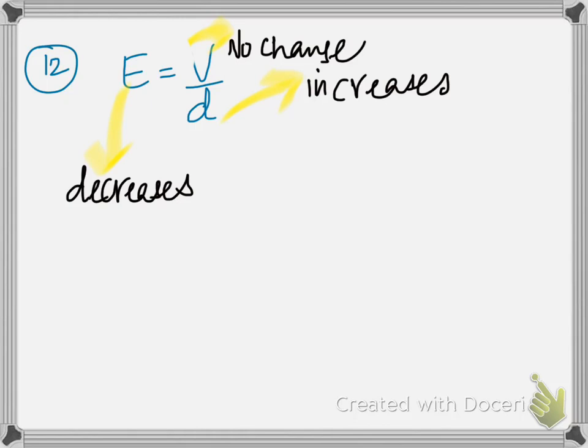Number 12. It says that a battery charges a paddle plate capacitor fully, and is then removed. The plates are immediately pulled apart. Charge does not change. It's only the distance that increases. If the distance increases, and there is no change in potential, no change there, then surely the intensity decreases.